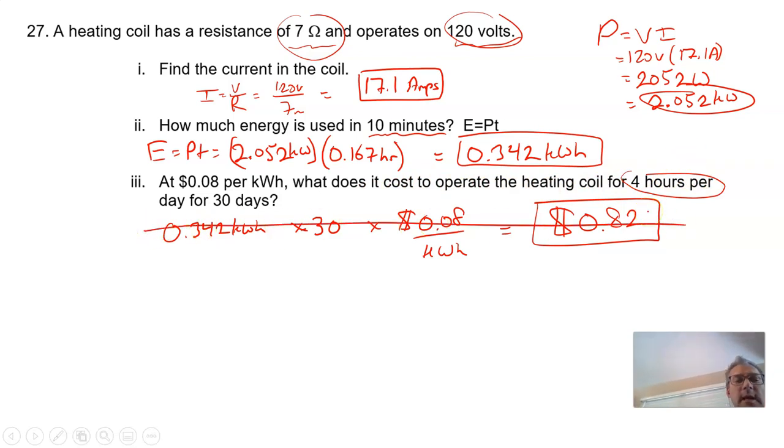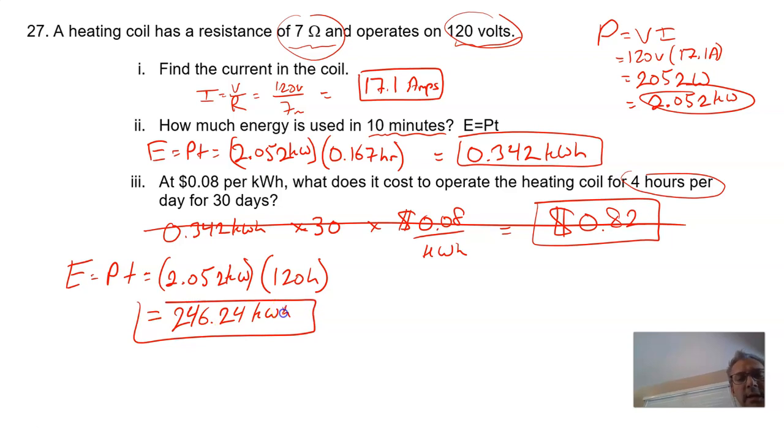This new problem says, what does it cost to operate the heating coil for 4 hours per day for 30 days? So I'm just going to draw a line through this. Let's check that problem again. Energy is power times time. The power didn't change, 2.052 kilowatts times 4 hours for 30 days. 4 hours for 30 days, that's going to be 120 hours total. That's going to give us an energy of 2.052 times 120 equals 246.24 kilowatt hours. That is the energy times our factor of 8 cents per kilowatt hour. And that's going to give us our cost.